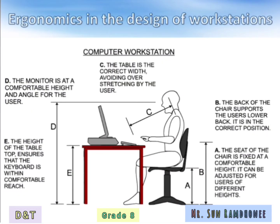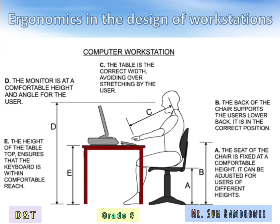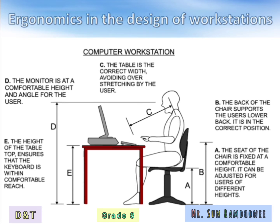The next part we are going to study is ergonomics in the design of workstations. A workstation is where a person works — we can relate that to an office with an office table or computer table and an office chair. Since that person has to work for long hours, we have to ensure that all the ergonomic factors have been considered to make the task easier and efficient. As you can read from the screen, there are several factors that have been considered.